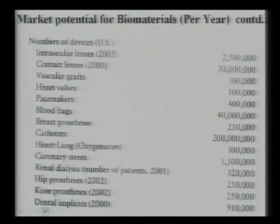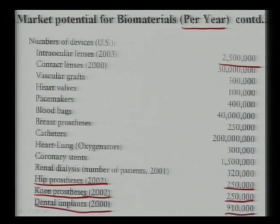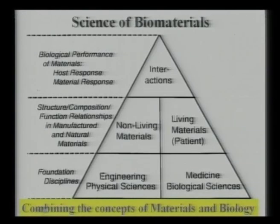This slide shows the market potential for biomaterials per year in terms of number of devices in the US. For intraocular lenses, the numbers reach several thousands. In 2002, knee and hip procedures were around 250,000 each. Dental implants were much more — 910,000 in 2000. These are materials used for load-bearing applications, including metals, ceramics, and polymers, largely used for hip and knee procedures as well as dental implants.